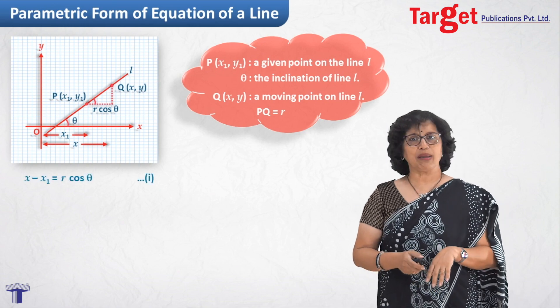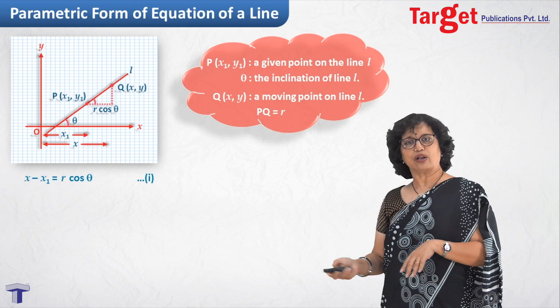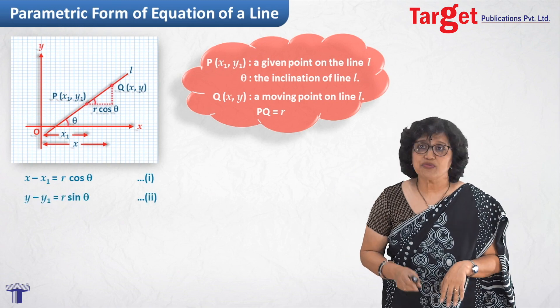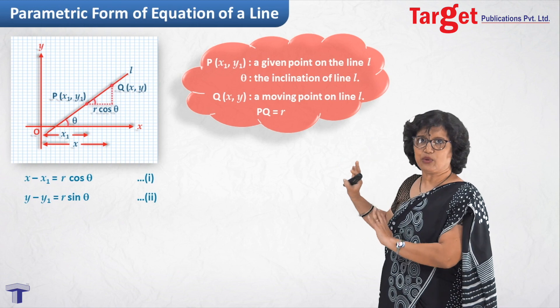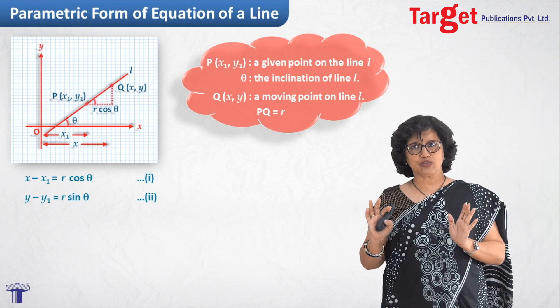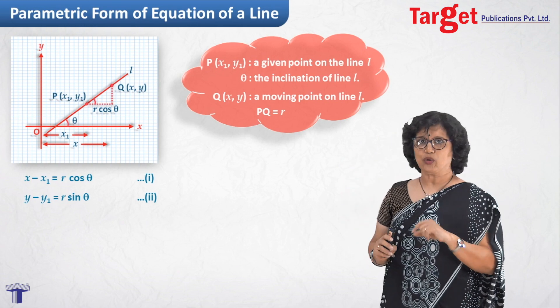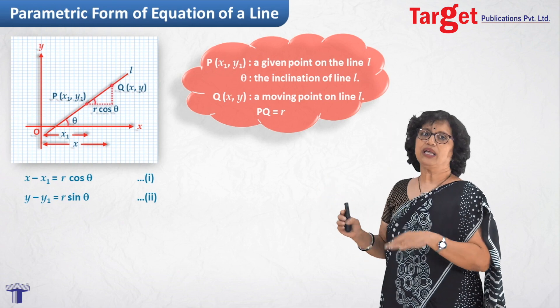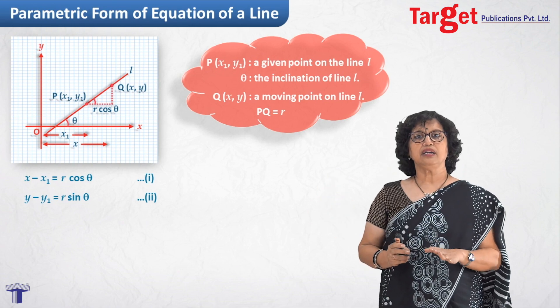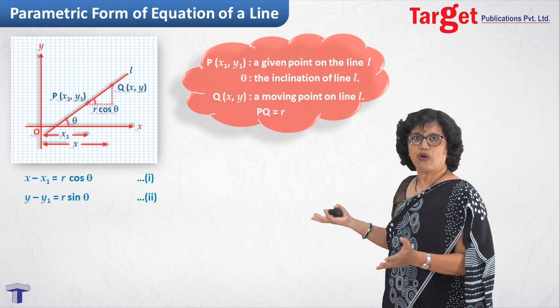So from picture what I am getting? x minus x1 equal to r cos theta, and I am getting y minus y1 equal to r sine theta. I hope everyone is able to understand how do I write x minus x1 and why am I equating it to r cos theta and similarly for the next one. y minus y1 equal to r sine theta. Now you may think it is very simple, you already know this.